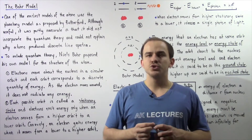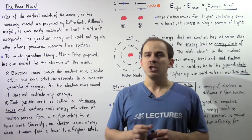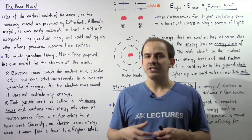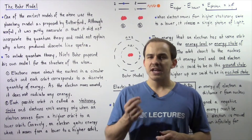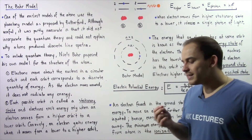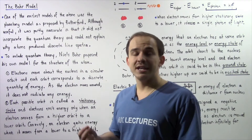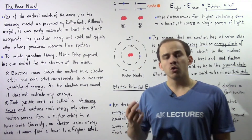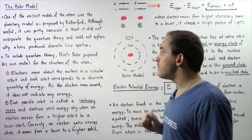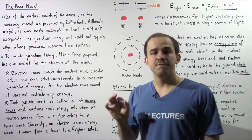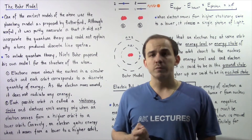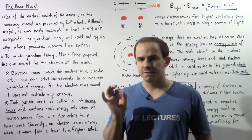One of the earliest models of the atom was known as the planetary model, which was proposed by Rutherford. Although useful, it did not describe the structure of the atom very accurately because of two important things. Firstly, this model did not incorporate the fact that energy is quantized — it did not include the quantum theory of energy. And secondly, it could not explain the line spectrum produced by individual atoms, failing to explain why atoms released electromagnetic radiation with specific frequencies.